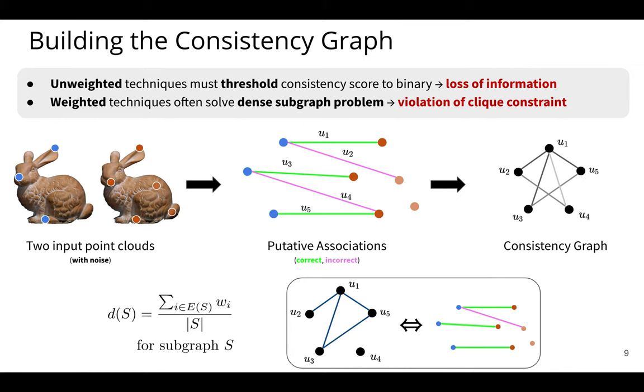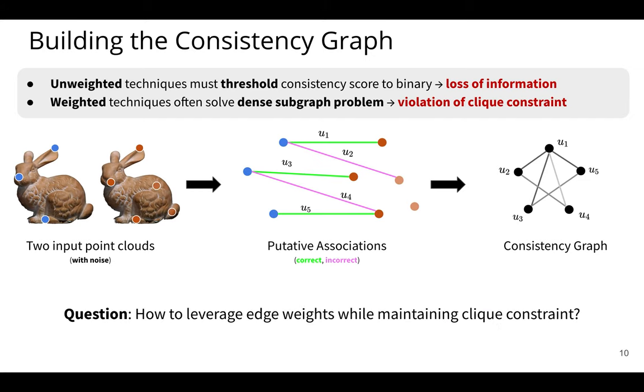Of course, the clique on the right corresponds to the actual inliers, but it's impossible to know just from looking at the cliques. On the other side of things, there are algorithms in the weighted category. And what these algorithms tend to do is formulate a dense subgraph problem. So density of a subgraph, the expression is shown here in the bottom left, it's the sum of the edge weights over the number of vertices in the subgraph. And the problem here is that it violates the clique constraint. A subgraph need not be a clique. In fact, the algorithm may choose to add an arbitrary edge here in the consistency graph because it increases the density metric. But this yields choosing incorrect associations. So then our question is, how do we leverage edge weights while still maintaining this clique constraint?